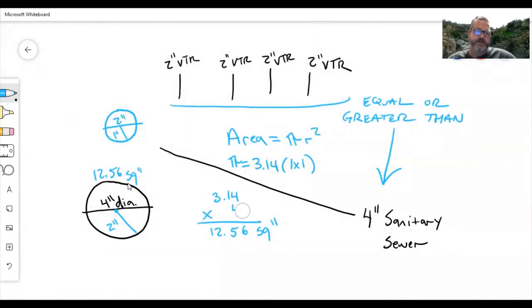I know this is a little bit redundant because everybody knows what 3.14 times one is—it's 3.14. So a two-inch vent through the roof has a cross-sectional area of 3.14 square inches.